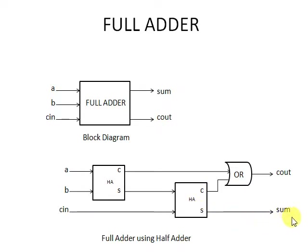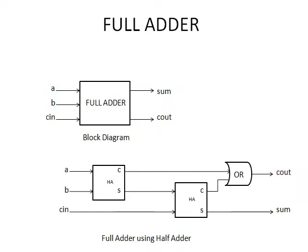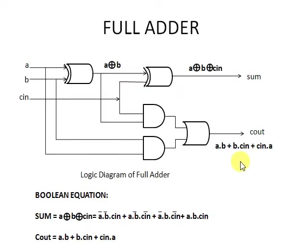The second half adder takes the sum of the first half adder and C-in, the carry input, producing two outputs: carry and sum. This sum will be the overall sum of the full adder, and the carry of the first half adder is added with the carry of the second half adder in the OR gate, producing C-out. This is the full adder using half adders diagram.